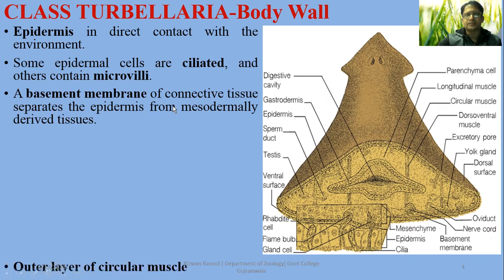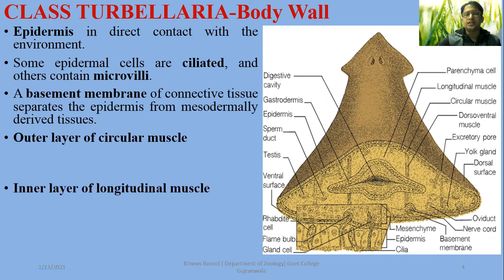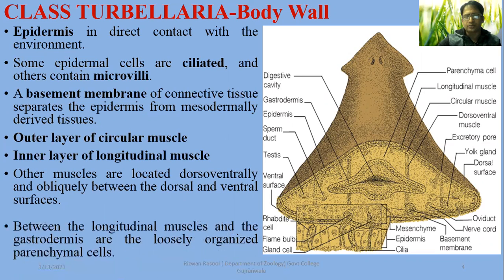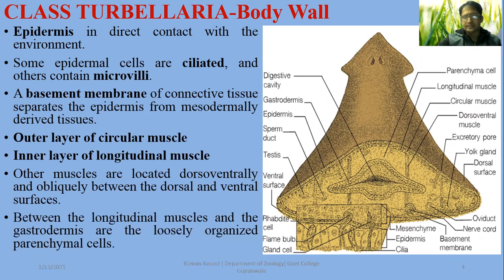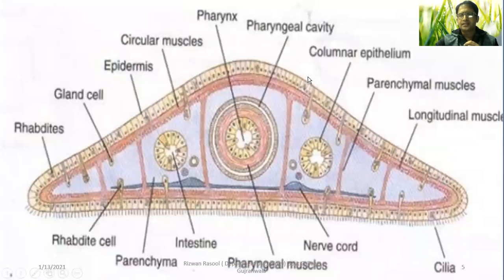Then we look at the basement membrane, which is made from connective tissue. The muscles are of different types in their body: longitudinal, circular, as well as dorsal, ventral, or obliquely placed muscles. There is also loosely organized tissue called parenchyma, which performs multiple functions. The mesodermal parenchyma structures are located beneath, and there is a layer named gastrodermis, which develops the gut.